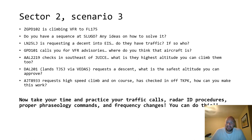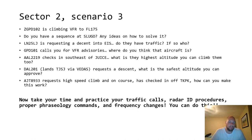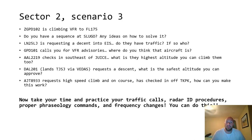Goodspeed 101 calls for VFR advisories — that 1200 code over Gouda is probably them, wanting VFR advisories back to San Juan. American 2219 checks in southeast of Juice — what is the highest altitude you can climb them to? Delta 201 who lands San Juan via Vetus is requesting descent — what is the safest altitude you can approve? Keep in mind you have the French West, who is very much faster, and the medevac descending into Beef Island direct. AmeriJet 8933 plus high speed climb on course is checked in off of Bradshaw — just remember that Boeing 767 heavy who loves to climb and go fast is going to eat that AM Flight's lunch at flight level 180. Let's figure out how to make that work. Now take your time and practice your traffic calls, radar ID procedures, proper phraseology, and frequency changes. I have faith in you.